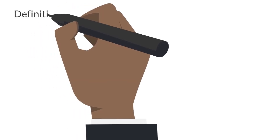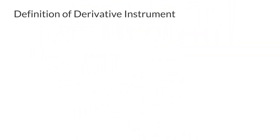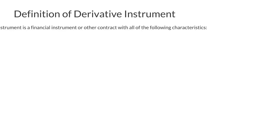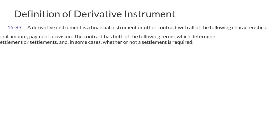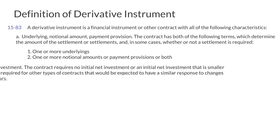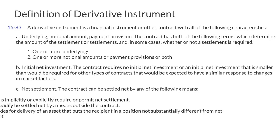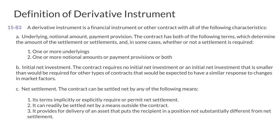For accounting purposes, a derivative is defined based on characteristics. In accordance with ASC 815, a derivative is a financial instrument or other contract with all of the following characteristics.